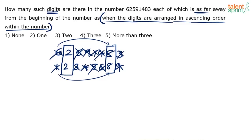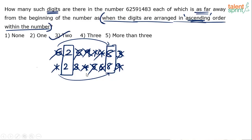Only digit 2 is in second position in both the numbers, and digit 8 is in seventh position in both the numbers. In the exam, all you have to do is arrange the digits in ascending or descending order as required by the question, write one number above the other, and find which digits are in the same position. So your answer will be 2 — those two digits are 2 and 8. Option 3 is the answer: two digits are in the same position.